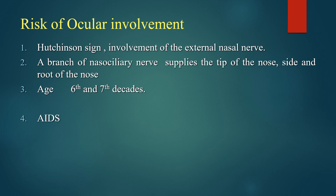Patients in whom ocular involvement can occur are those with involvement of the external nasal nerve — this is called Hutchinson's sign. A branch of the nasociliary nerve supplies the tip, side, and root of the nose. It usually occurs in the sixth and seventh decade of age, and also in patients with immune deficiencies or those who are immunocompromised, such as patients with AIDS.